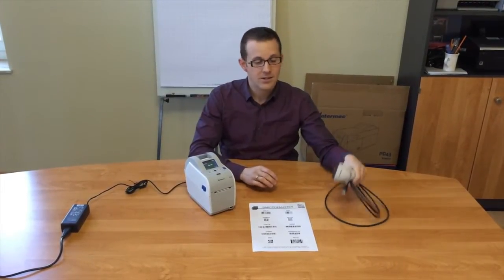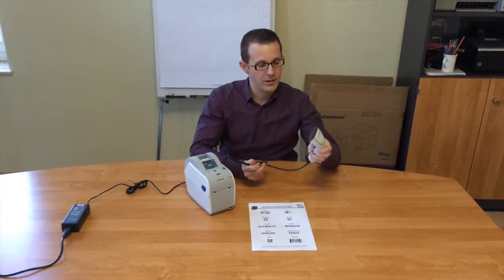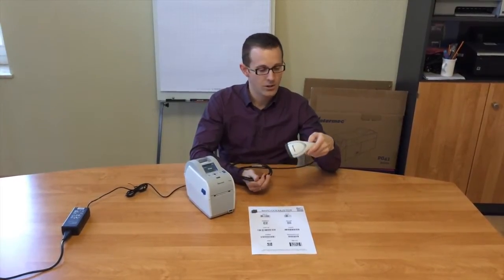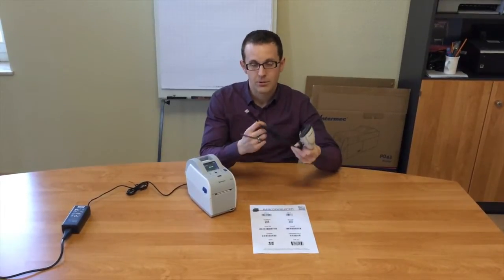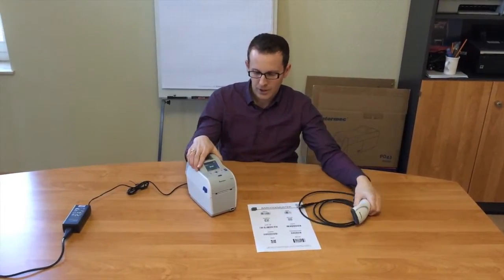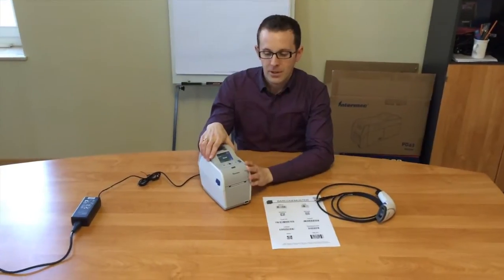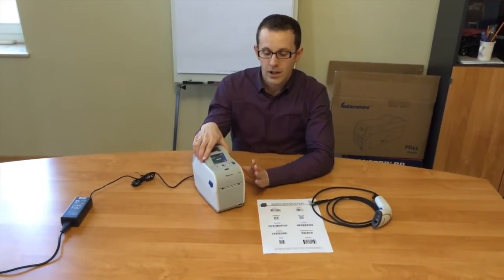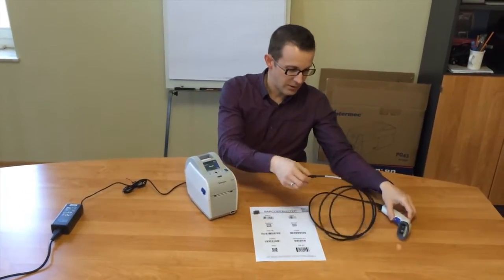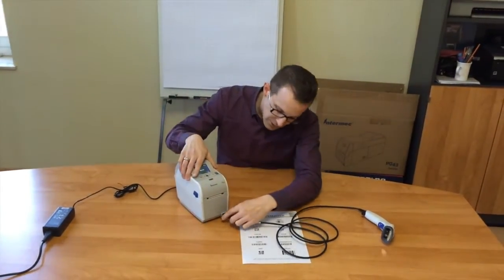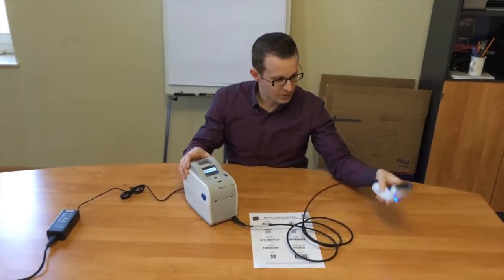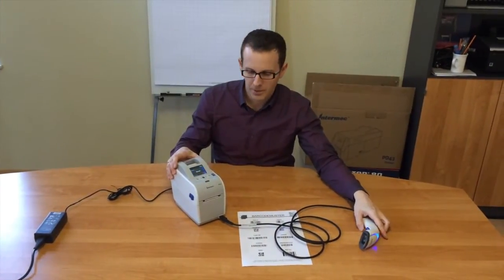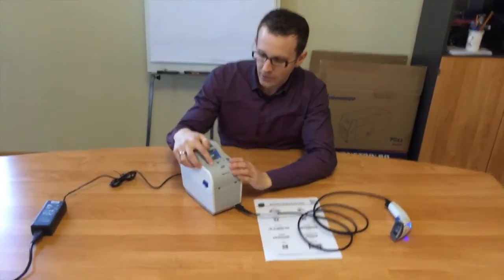What you need is a simple barcode reader - I've got an Intermec SG20 with a simple USB connection - and I've got a PC-23 printer. Now I'm going to connect the barcode reader to the printer. You just heard the beeping, it's connected.